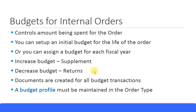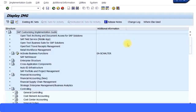These are all budget documents for internal orders. You must maintain a budget profile in the order type. In the example we created in the internal order master data, we maintain a budget profile — the one with many zeros followed by one — which is the default one given by SAP. It's sufficient for most tasks. You must maintain a budget profile in the internal order type if you want to assign budgets to orders created under that order type.